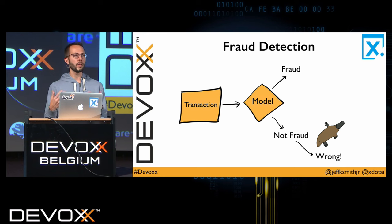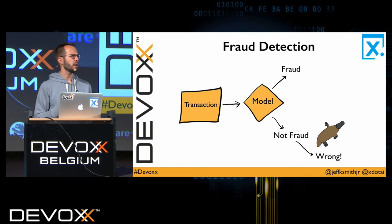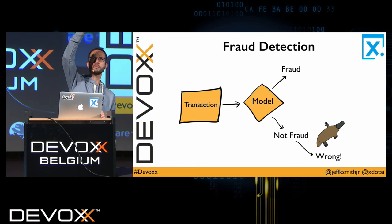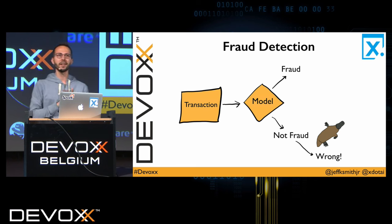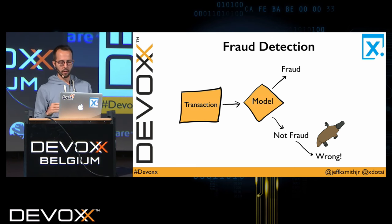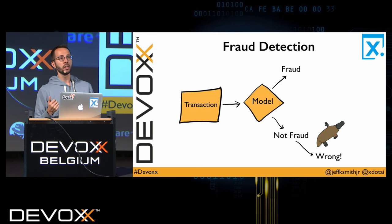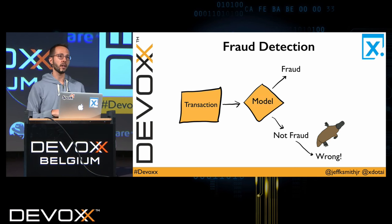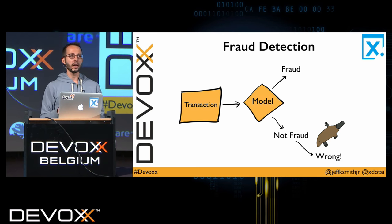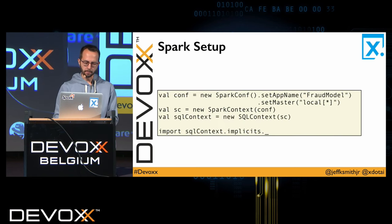I'll show you how to build a basic fraud model. In this case we're going to use Spark. Spark is implemented in Scala and has APIs available for Scala, Java, Python, and R — a very powerful JVM technology that scales up to impressive performance feats on cluster-scale computing.